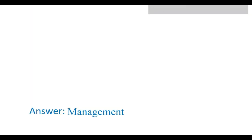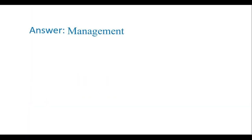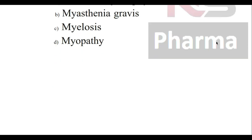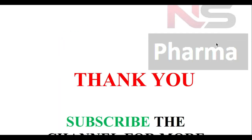Question number twenty-five: Thompson's disease is associated with — Option A: Muscular dystrophy, Option B: Myasthenia gravis, Option C: Myelosis, Option D: Myopathy. The answer is muscular dystrophy. Thank you for watching; we will upload the next part soon.